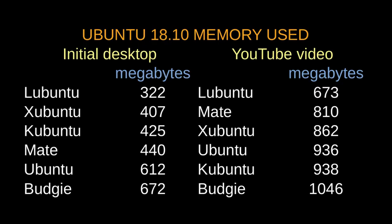I compared them under two different circumstances. One was the desktop alone just after the system loaded, and the other was with a YouTube video playing. I used the same video in each comparison and it was at normal size, not full screen. In all cases, I used the terminal with the free -m command to check the amount of random access memory used.